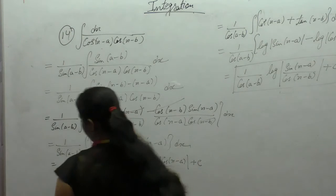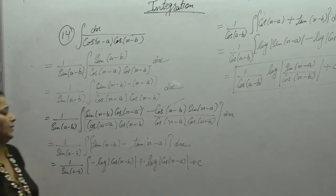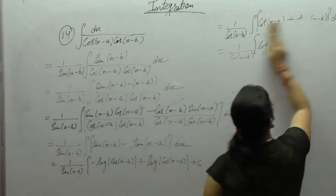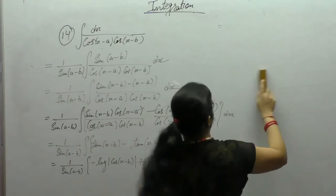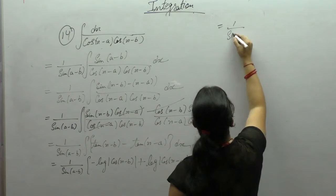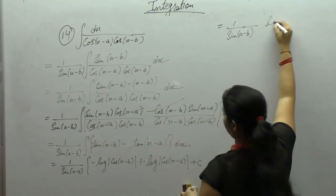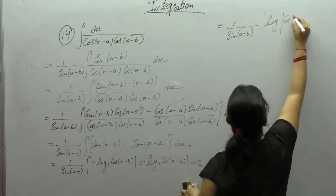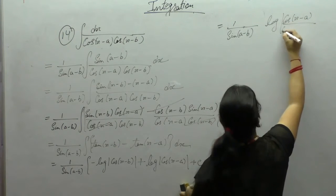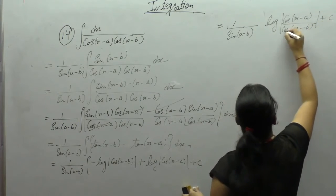Again apply the formula: log(a) minus log(b) equals log(a upon b). The final answer is 1 upon sin(a minus b) times log of cos(x minus a) upon cos(x minus b), plus C.